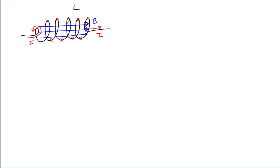Since it passes through the loops of the solenoid, that magnetic field creates a magnetic flux within the solenoid. That magnetic flux is going to be proportional to the magnitude of the magnetic field and a surface area vector that is parallel to the central axis of the magnetic field, perpendicular to the plane of the area of each loop. Let's note that the area vector and the magnetic field vector are parallel, so the angle between them is equal to zero degrees — a useful quantity for when we calculate the magnetic flux.